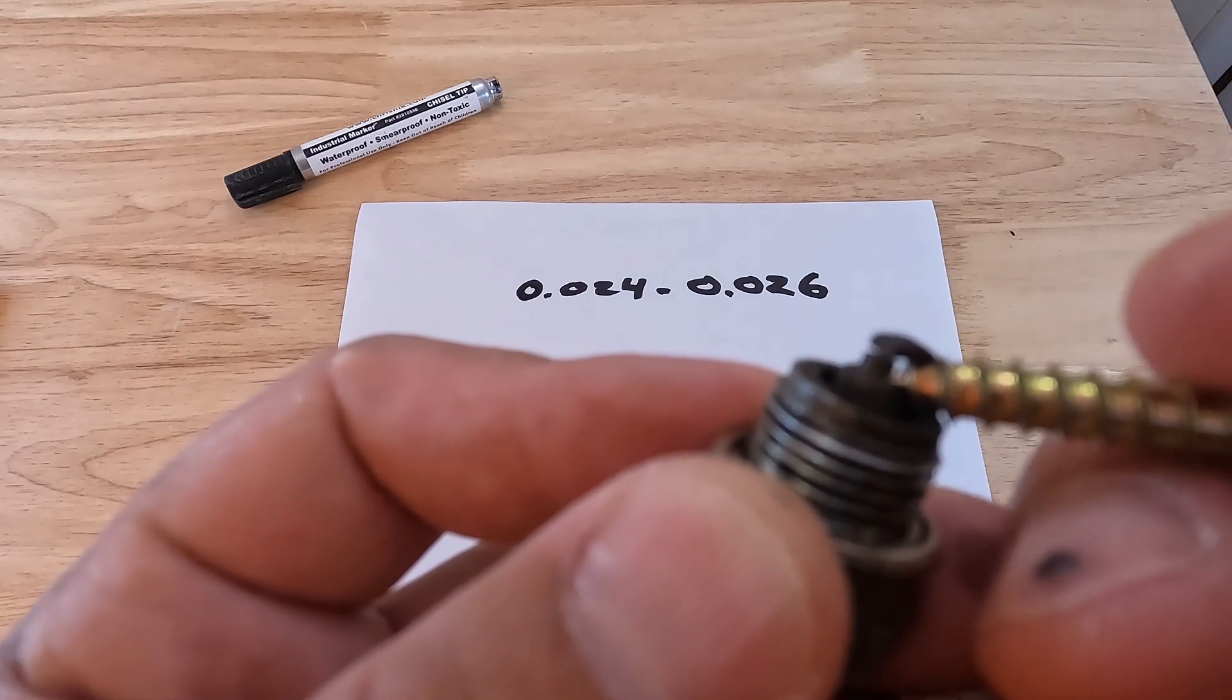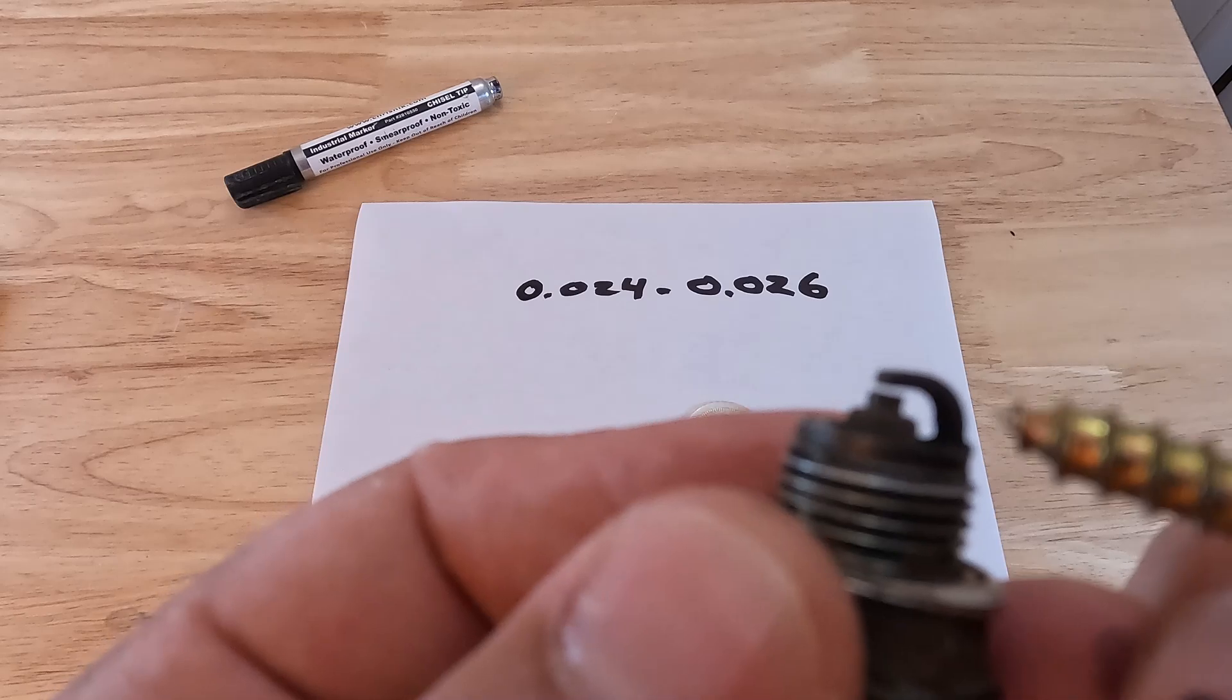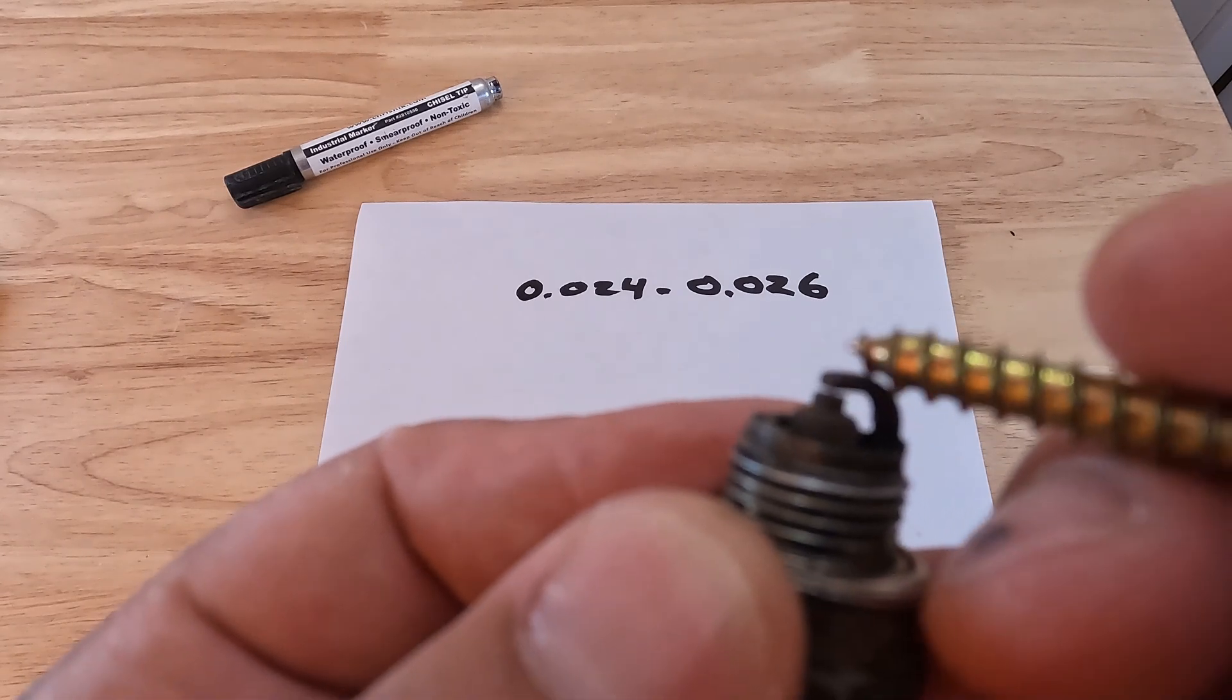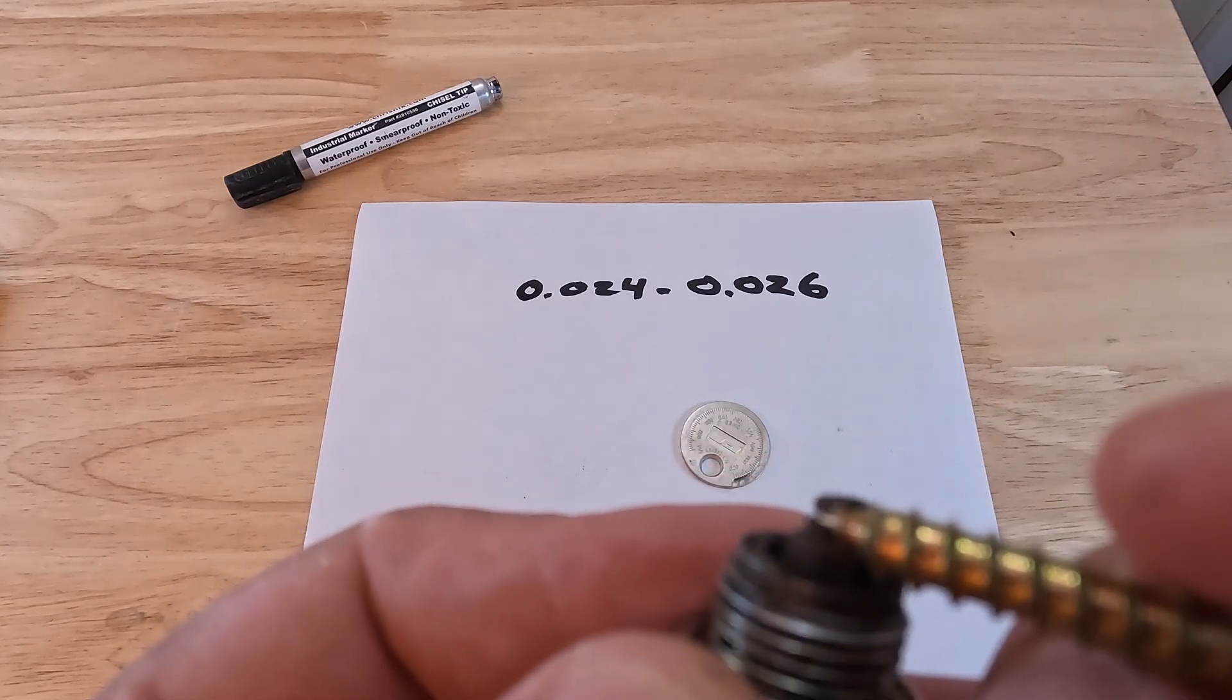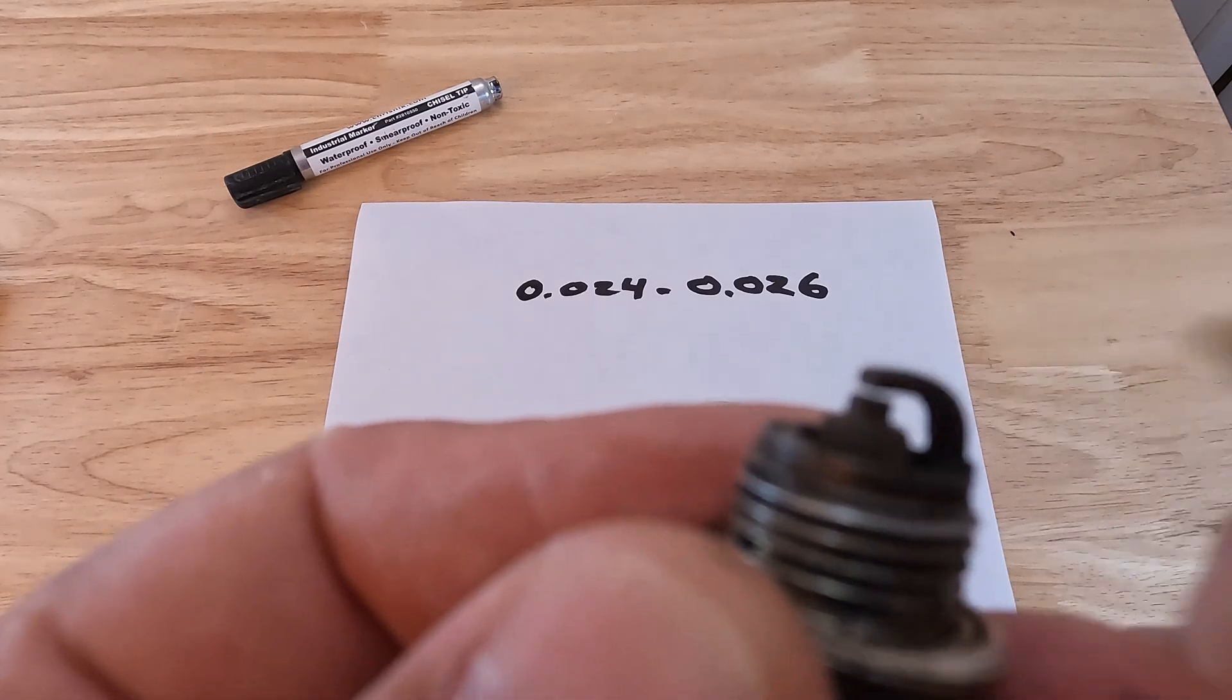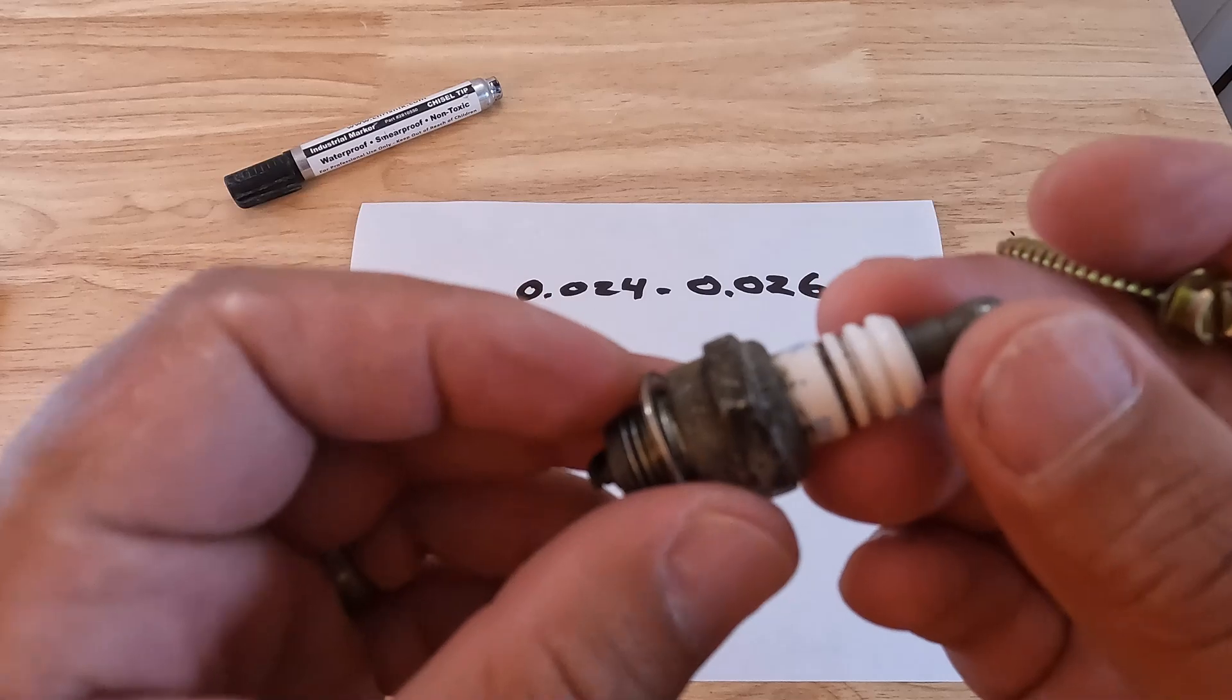Inside the insulator tip is our center electrode right here, that's the piece sticking up. And then we have our side electrode. The arc goes from the center electrode to the side electrode and that's what creates that combustion in your engine. Okay, so now you know what all the pieces of the spark plug are.